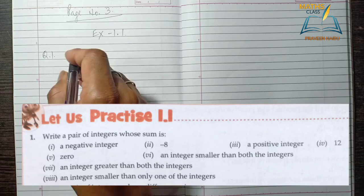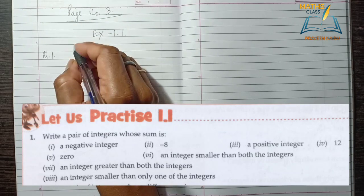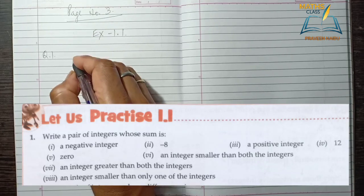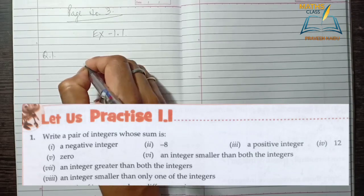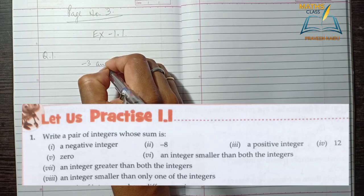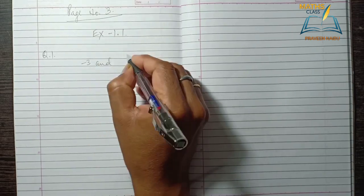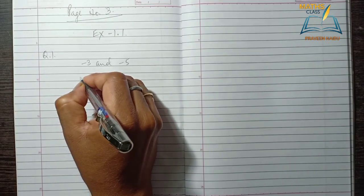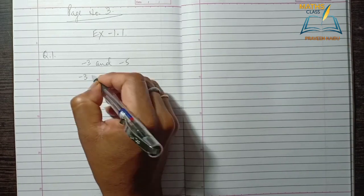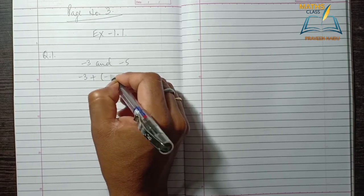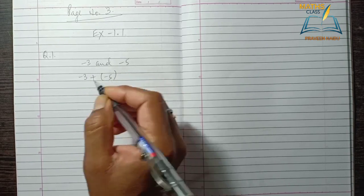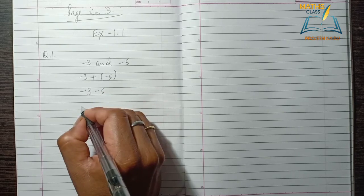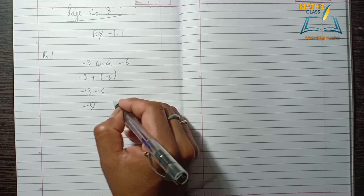For example, if we take minus 3 and minus 5 and we add them, the solution is minus 8.